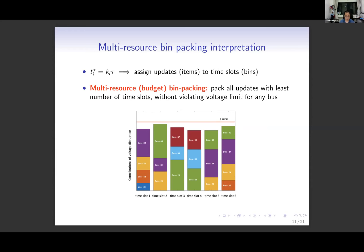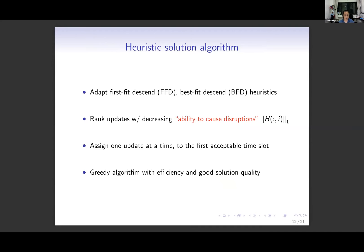We call our problem the multi-resource bin packing problem with a budget, because we have more than one bus for which we need to enforce voltage limits. The bin packing problem is classical, with many well-known heuristic algorithms such as First-Fit Decreasing (FFD) and Best-Fit Decreasing (BFD). We make a slight modification to these algorithms for our multi-resource case. These heuristic algorithms turn out to be very effective for our application, as we'll see in our case study.